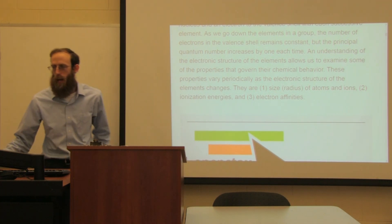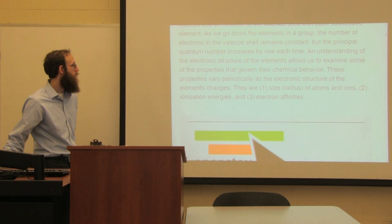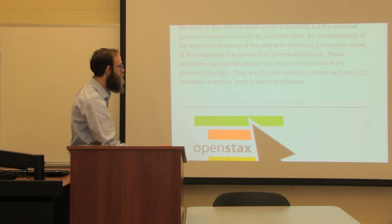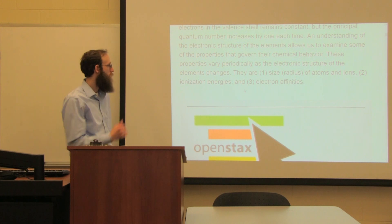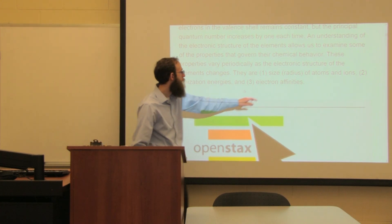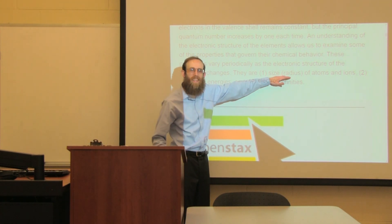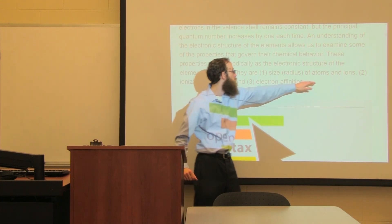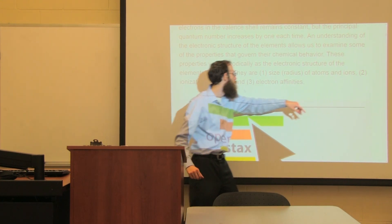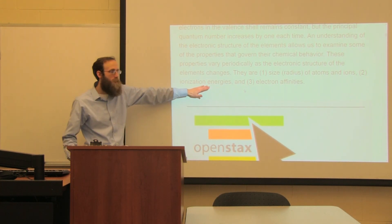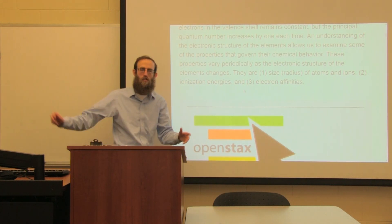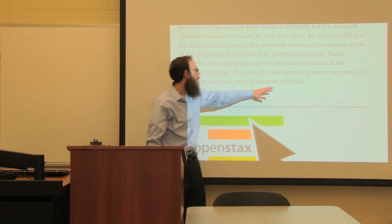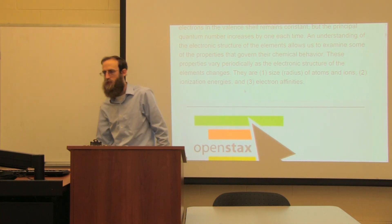We'll look at how these properties vary as we go across and down the periodic table. The properties we're looking at are going to be the size - the radius of atoms and ions - ionization energies, meaning removing electrons, and electron affinities.